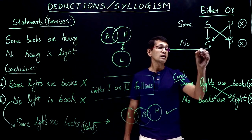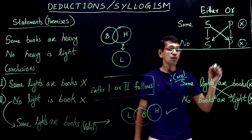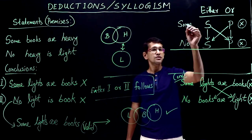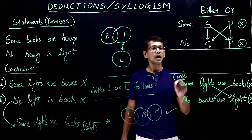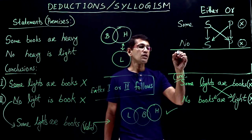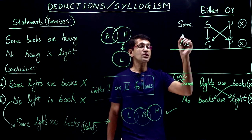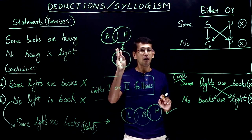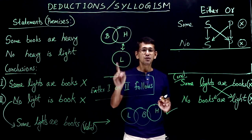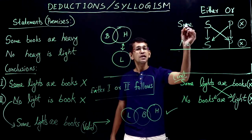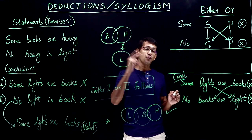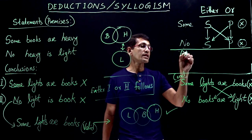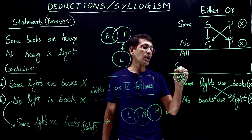We have another pair for either-or. What would be the second pair of either-or? This is the first pair — some and no. The second pair would be the other two standard statements. The four standard statements are: all, some, no, and some-not. So here we have some and no. The other two statements would be all and some-not.